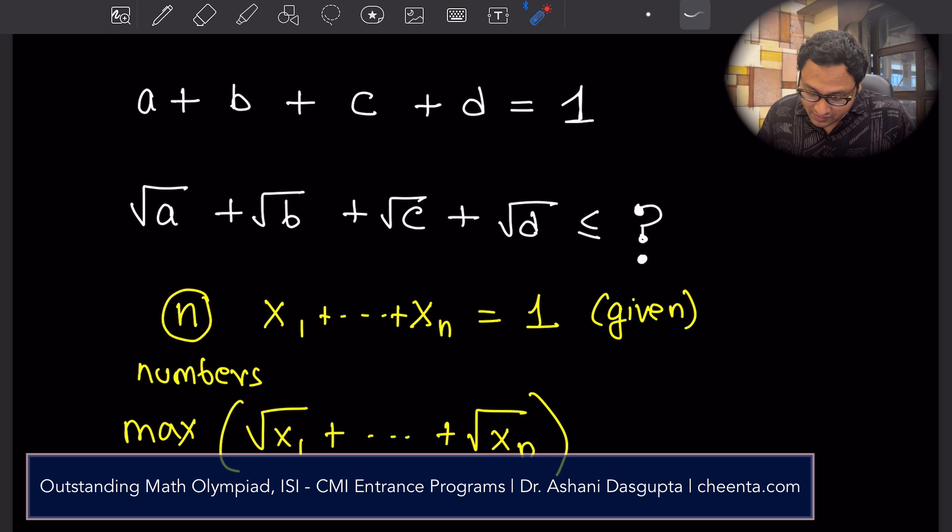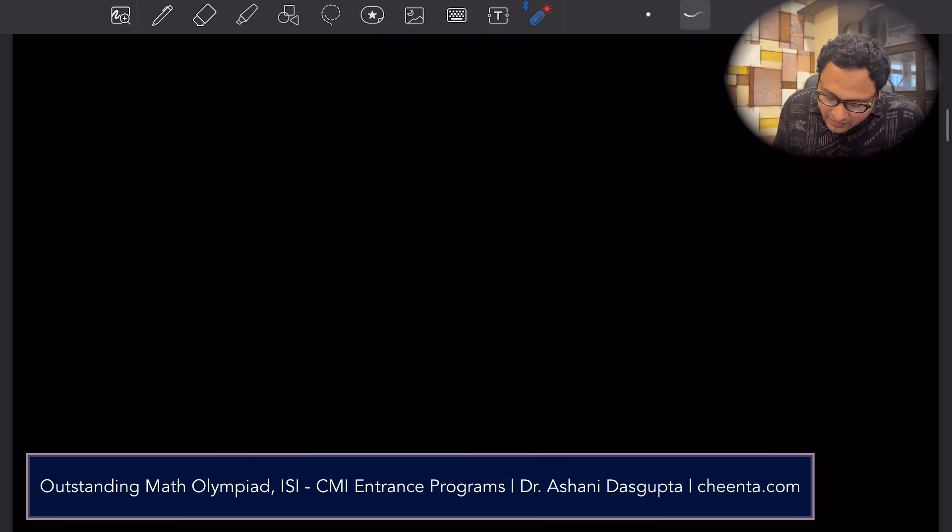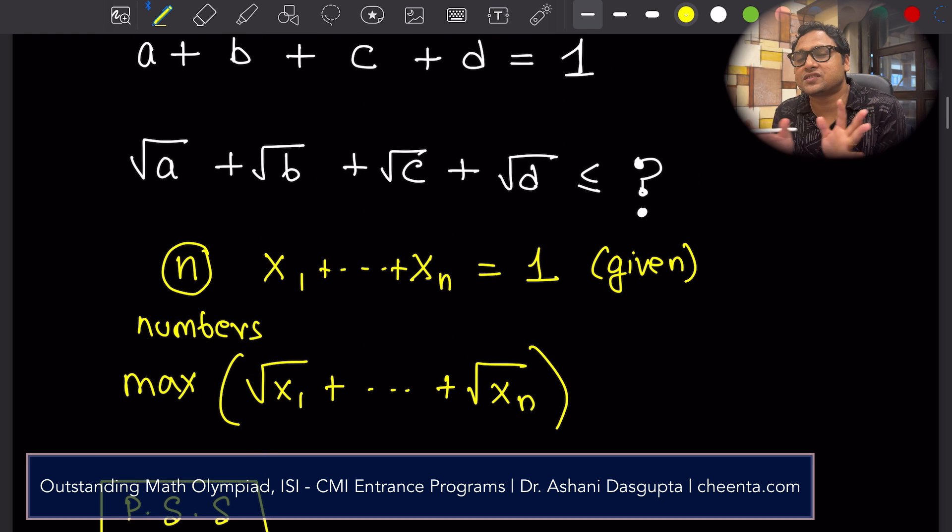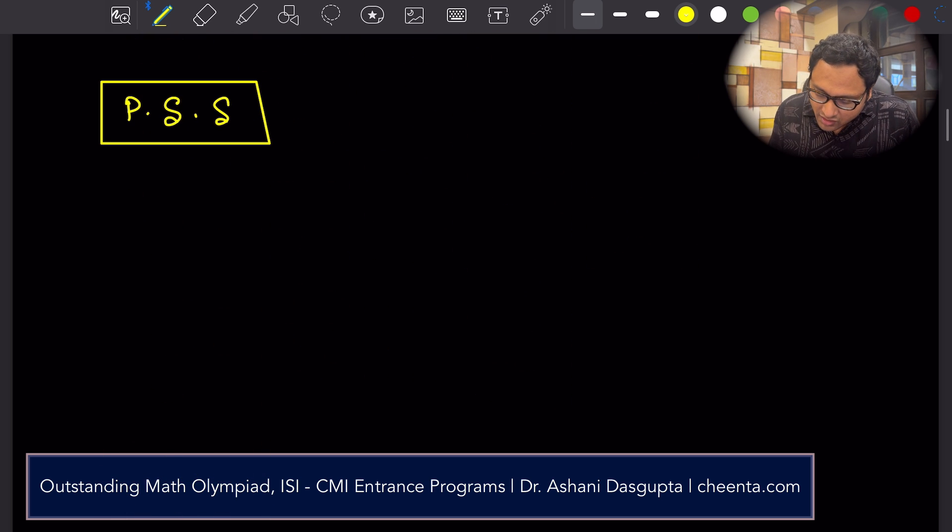Well, here is a problem solving strategy. Whenever you see a bunch of square roots getting added up, think about the Cauchy-Schwartz inequality.